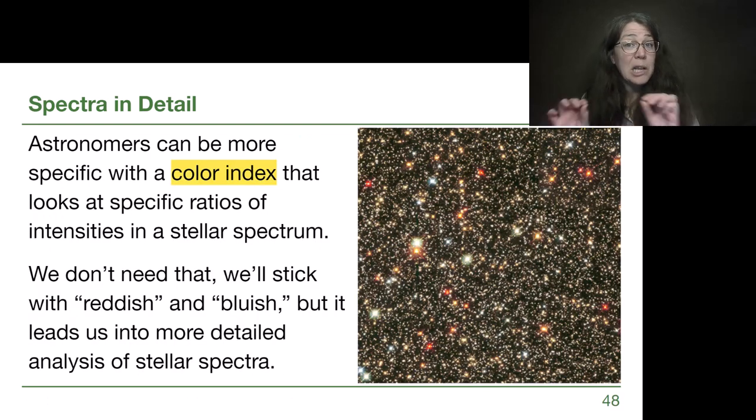Astronomers can be a lot more specific than thinking about reddish and bluish by using a color index, and that is described in our textbook, but it goes beyond the level of depth that we need for our introductory astronomy course. So I welcome you to look into that more if you're interested. There are several different color indices that are number values describing the relative intensities at two different parts of the spectrum. We don't really need it. It's not even in our vocabulary. It's not a bolded glossary term, but we do want to recognize that astronomers are able to be very specific about color in a way that we're not trying to be in this course.